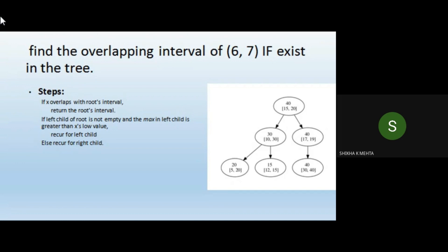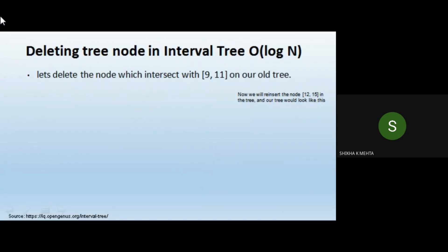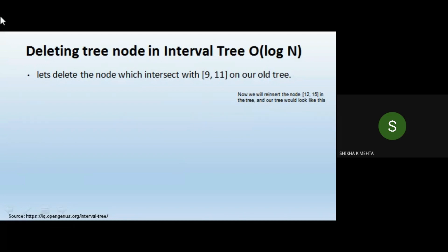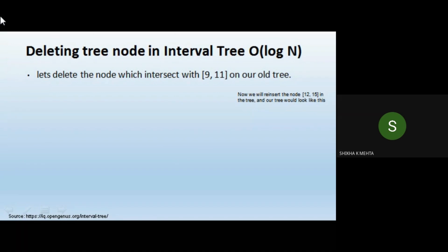This is how we find the overlapping interval of a particular query from the given interval tree. Whenever we have divide-and-conquer work or we are traversing the tree where it is approximately divided in half, it always takes O(log n) time for performing any operation.